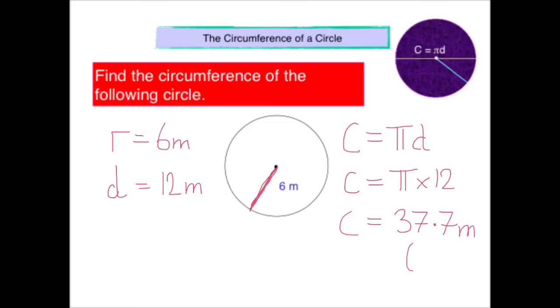I can check my answer using mental maths. Knowing that pi is roughly about 3, let's check it out. 3 times 12 is 36. My answer is 37.7. That's pretty close. And I can be confident it's correct.